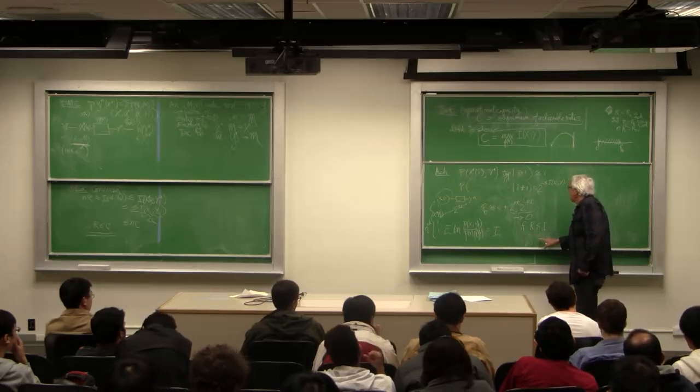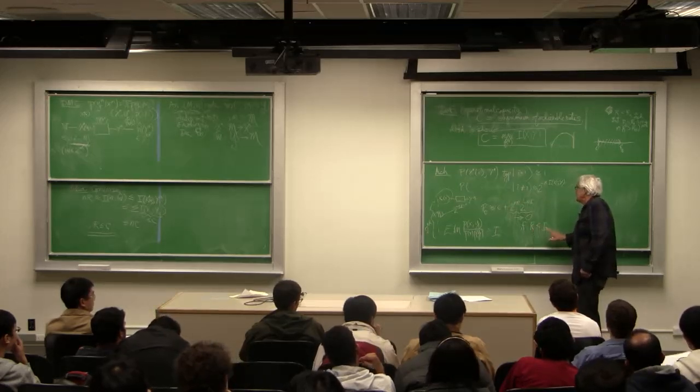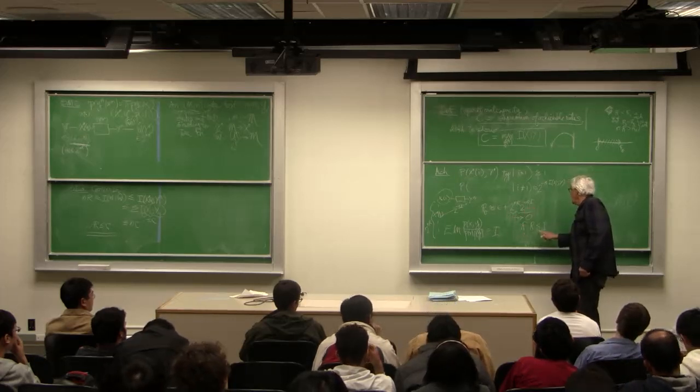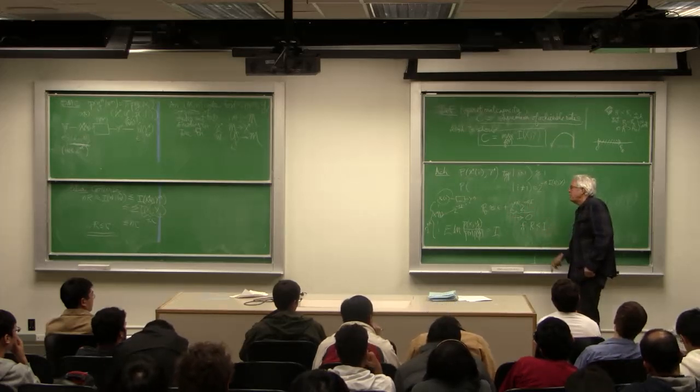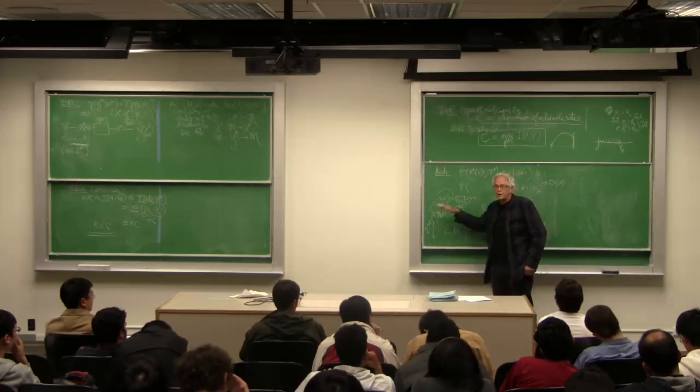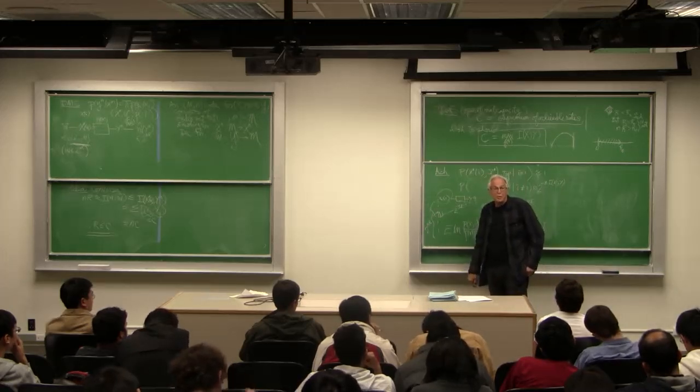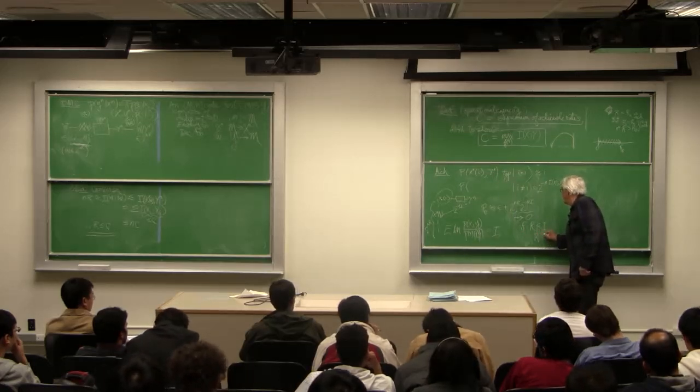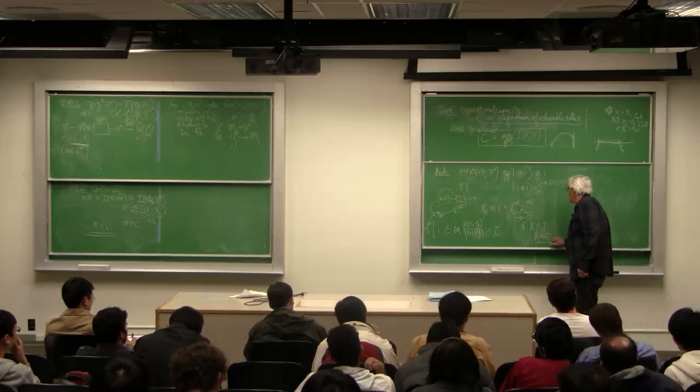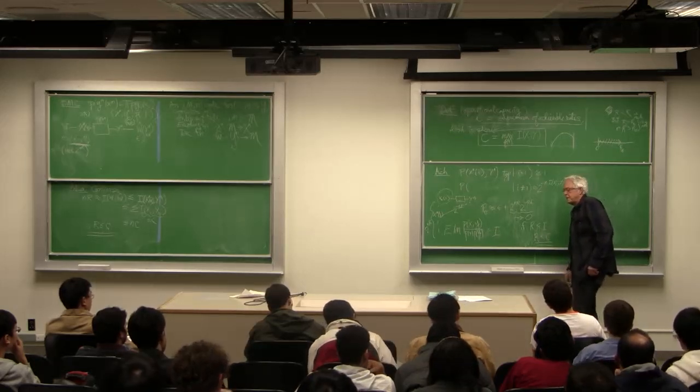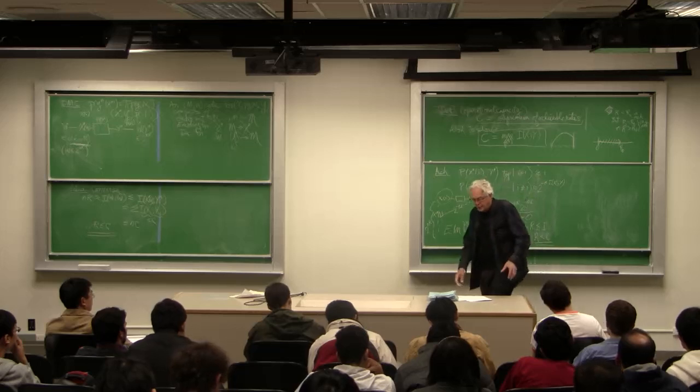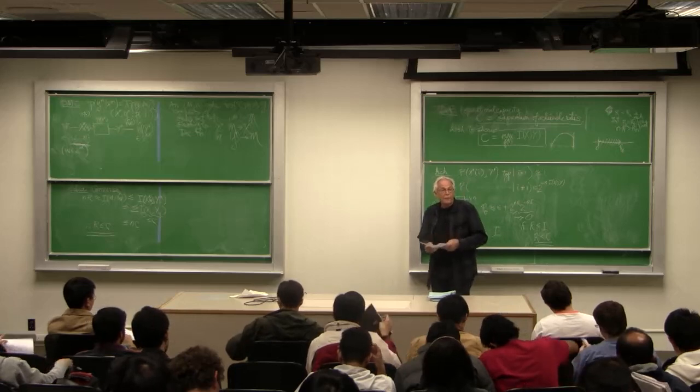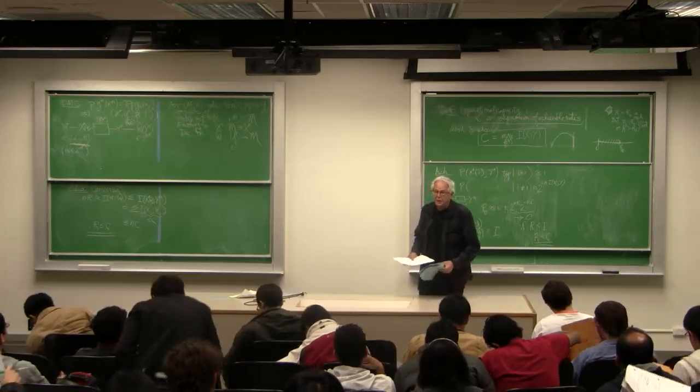So, here's the outline. If r is less than I, the probability of error can be driven to zero. And, since I was arbitrary, we may as well choose our code words according to the distribution p of x that maximizes I. So, we get rates up to C. Alright. So, that does it for today. Next time we will prove as much as we can of Shannon's second theorem.